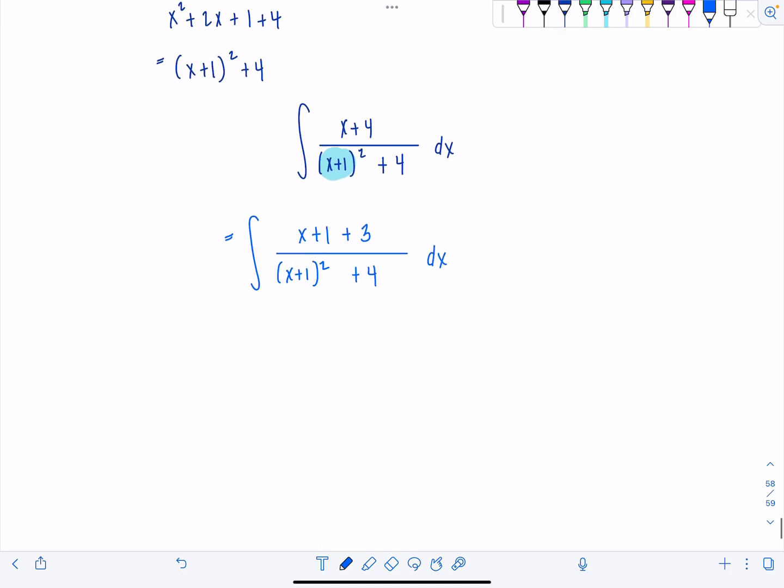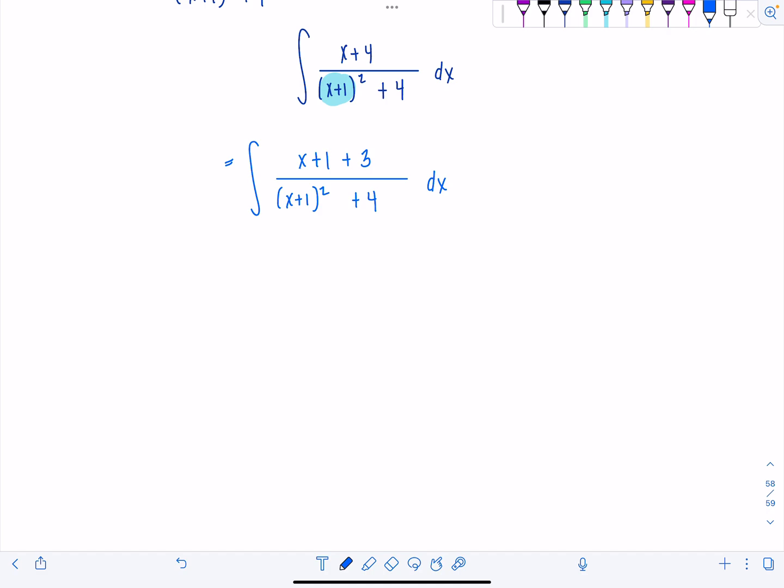And then next up, we're going to split this into two integrals. So first one's just going to be x plus 1 over x plus 1 squared plus 4 dx plus, and then we have integral 3 over x plus 1 squared plus 4 dx. We'll tackle these one at a time. So this is integral number 1 and number 2.